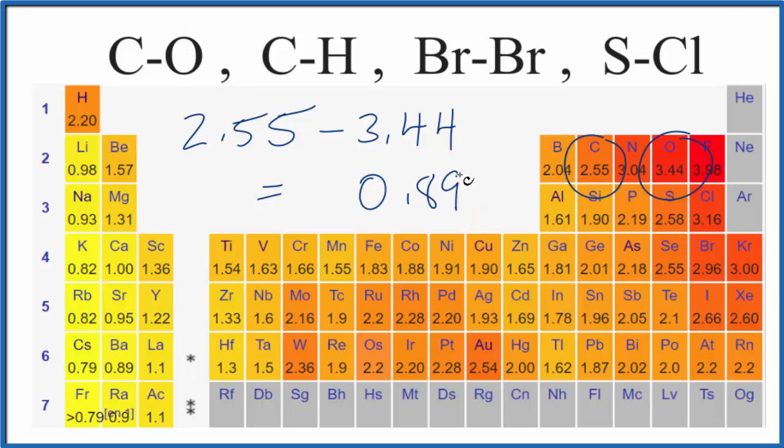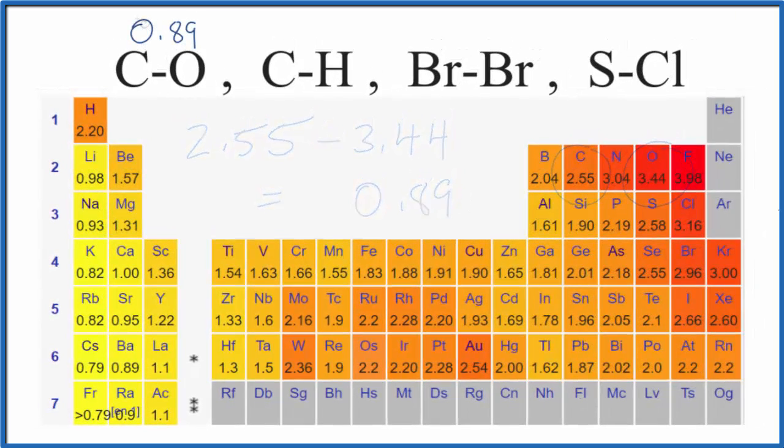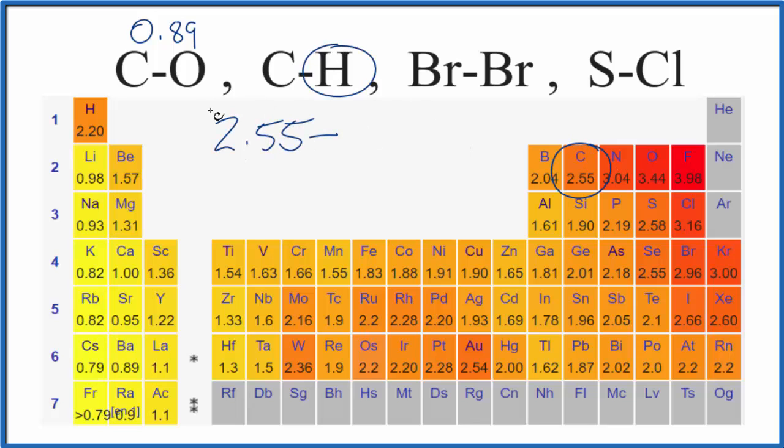This bond is polar when it's over 0.4 or 0.5. For carbon and hydrogen, carbon is 2.55 and hydrogen is 2.20, giving us 0.35. That's less than 0.4 or 0.5, so this is a nonpolar bond. There would be a dipole because we have an electronegativity difference, but we wouldn't classify it as a polar bond. What about bromine and bromine?